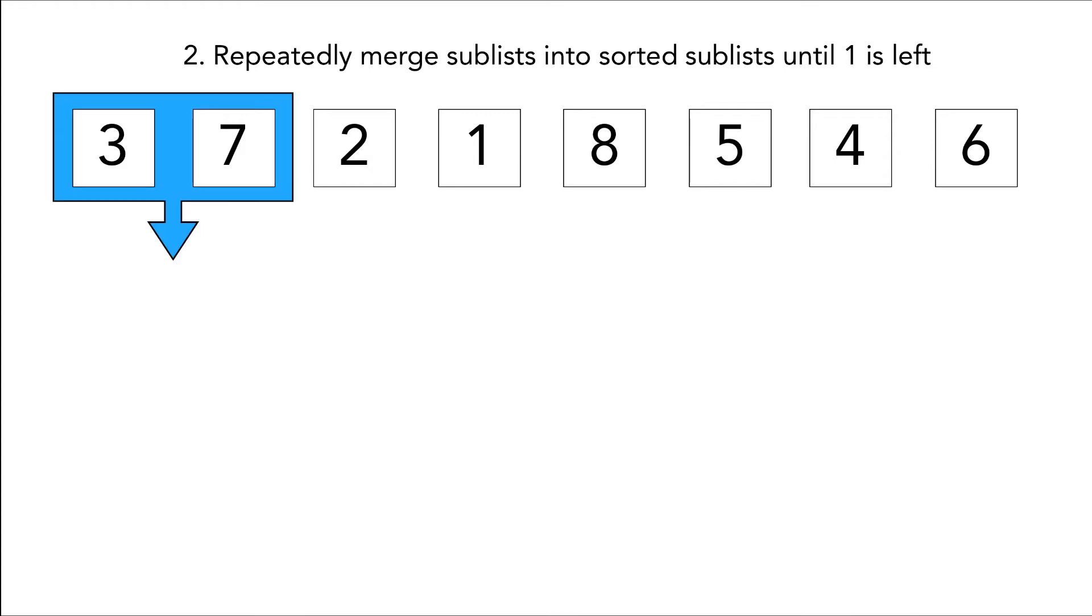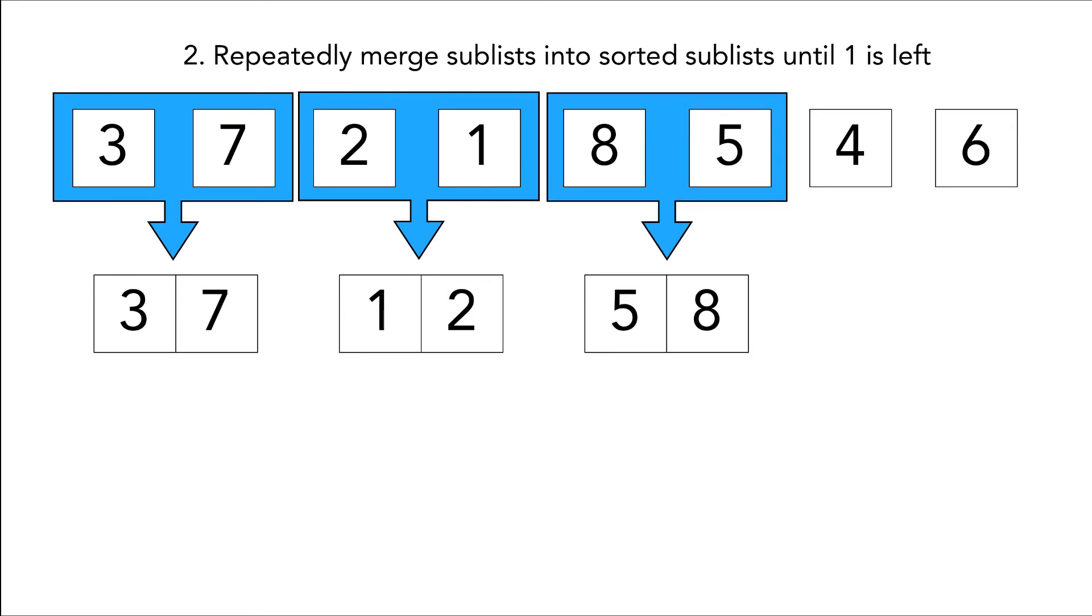So here we have three and seven. Three and seven is in the right order so when we create an array we're not gonna change anything. Our next step is two one, however we know that two is greater than one so we're gonna say one two. We know that eight is greater than five so we say five eight and then four and six are already in order so that stays the same.